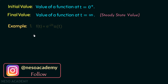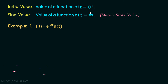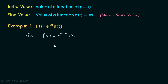For example, if we have a function f equal to e to the power minus 2t u(t), the initial value is at t equal to 0 plus. To calculate it, we substitute t equal to 0: e to the power minus 2 times 0, times u(0). e to the power minus 0 is 1, so the initial value equals 1.